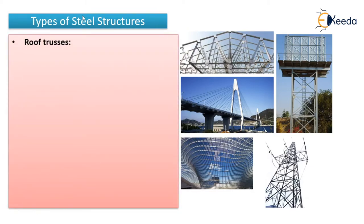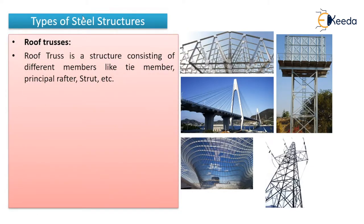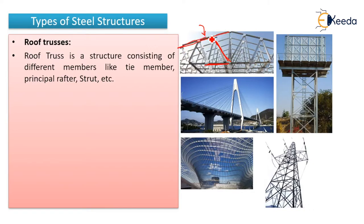Let's see the first type: roof trusses. A roof truss is a structure consisting of different members. As you can see in the picture, this is the roof truss. It will have different members — the bottom one is known as the tie member, the inclined members are known as struts, and the long one is known as the principal rafter. This member is called a truss.